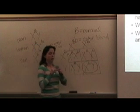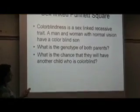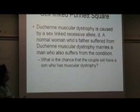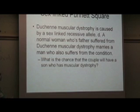Let's do one more example. Duchenne muscular dystrophy is caused by a sex-linked recessive allele, little d. A normal woman whose father suffered from Duchenne muscular dystrophy marries a man who also suffers from the condition. What is the chance that the couple will have a son who has muscular dystrophy?